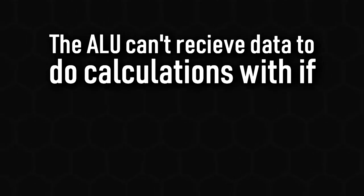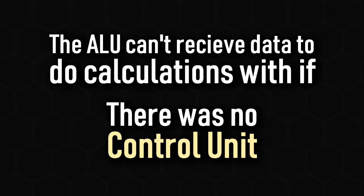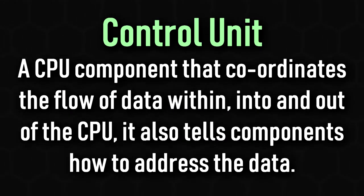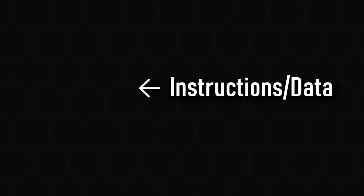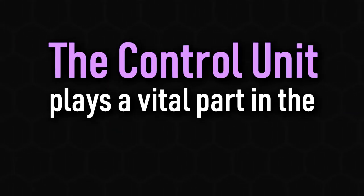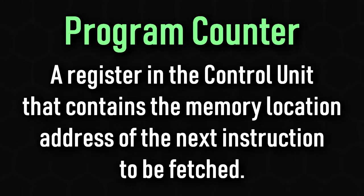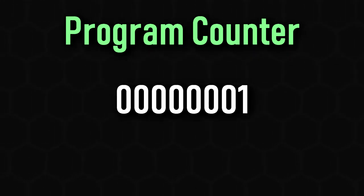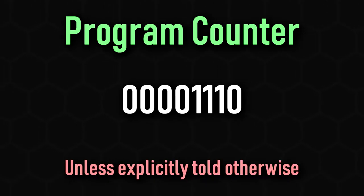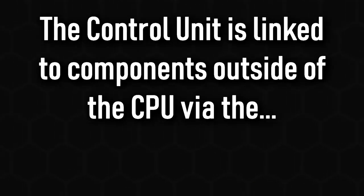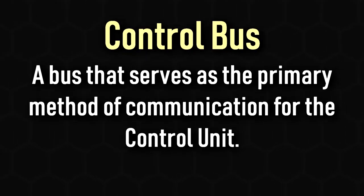The ALU won't get any data without the control unit, which has the job of coordinating processes inside the CPU and telling components how to respond to the instructions they are given. It also directs data flow to different CPU components, such as sending data from memory to the ALU. The control unit plays a vital part in the FDE cycle, and one key component within it is the program counter — a register that holds the memory location address of the next instruction to be fetched, typically incremented by one each cycle unless told otherwise. The control unit is linked to components like RAM via a specialised control bus, which transports instructions and status signals to and from devices.